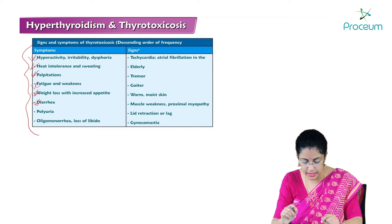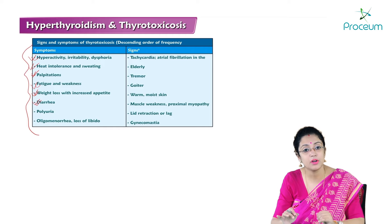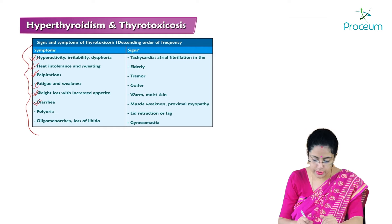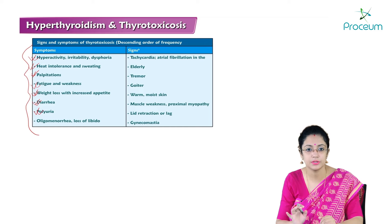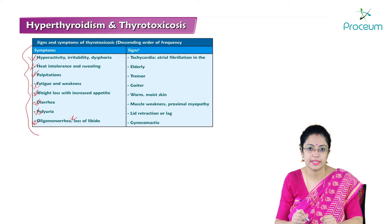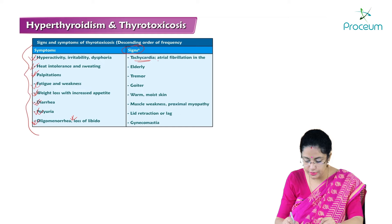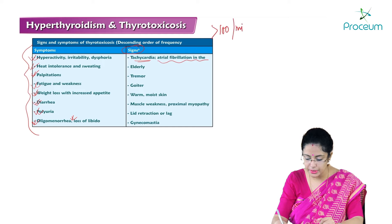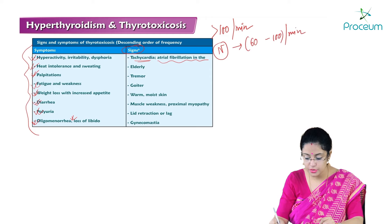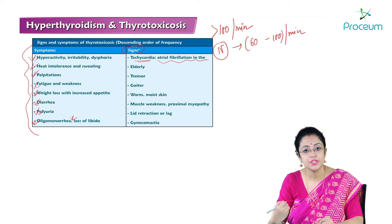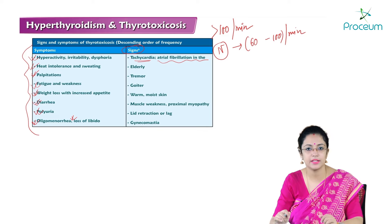Other symptoms include hyperdifecation (not exactly diarrhea), polyuria, oligomenorrhea (decreased bleeding during menstruation), and loss of libido. Signs of hyperthyroidism include tachycardia — heart rate more than 100 per minute — and atrial fibrillation, especially in elderly patients. Atrial fibrillation is one of the supraventricular tachycardias and an important arrhythmia seen in hyperthyroidism.